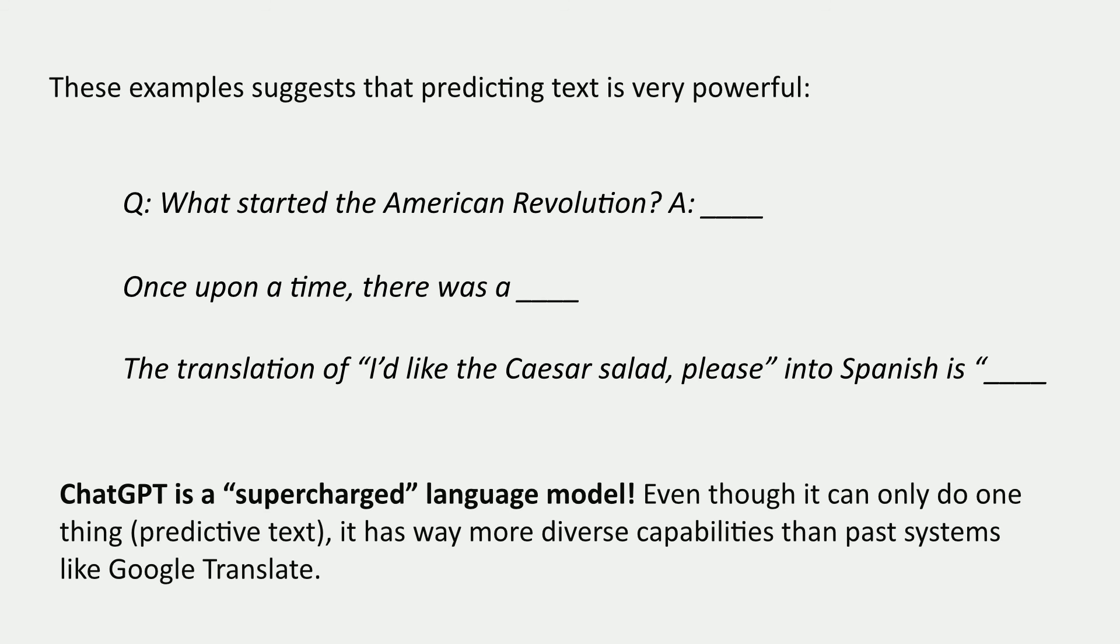This is how ChatGPT works. It's a supercharged language model that's very good at predicting the next word. And so, even though that's the only thing that it can do, it has much more diverse capabilities than these past systems like Google Translate. And this is one of the biggest ideas in the field of natural language processing in the last decade. That this kind of language modeling is really a universal interface to a lot of different problems. So, now that we've seen the kind of reason that we want to build language models, next we're going to talk about actually how we do it, how we represent this uncertainty over possible next words.